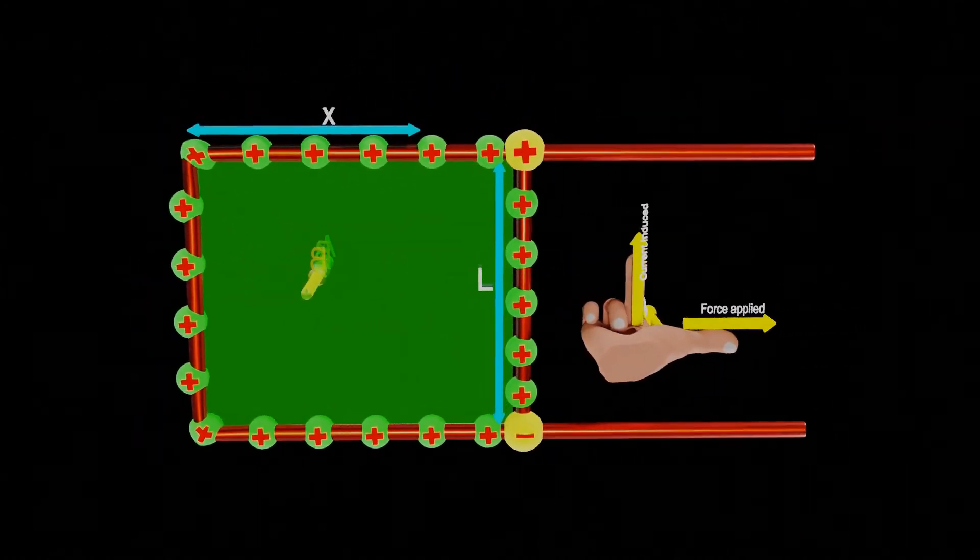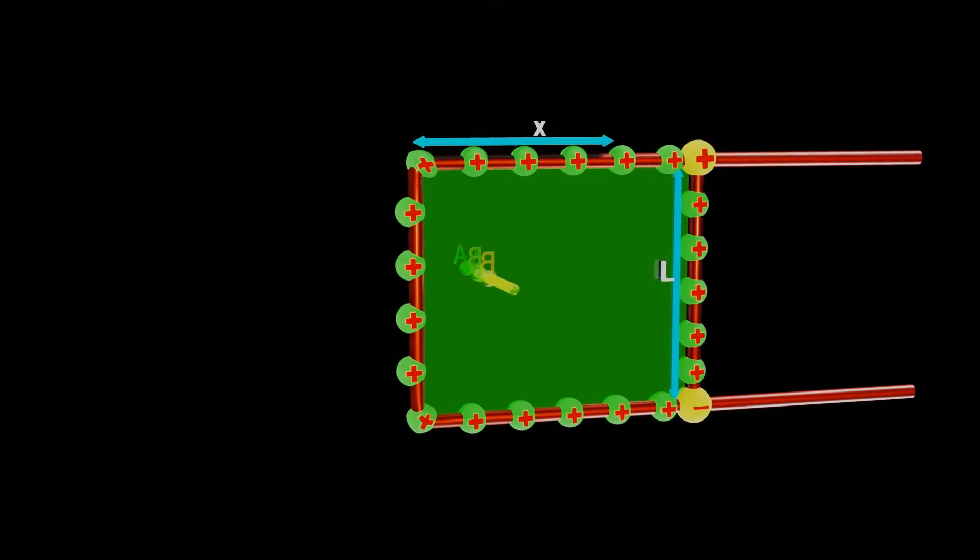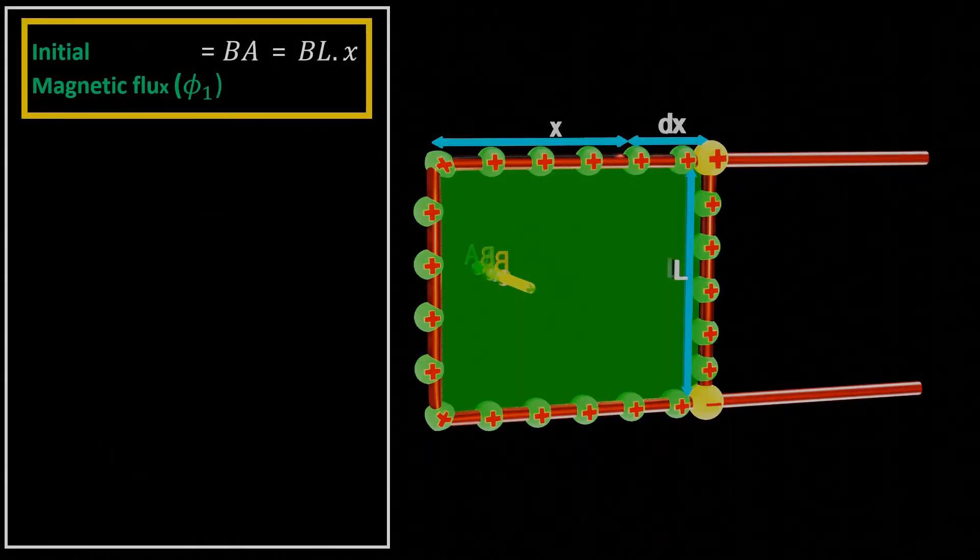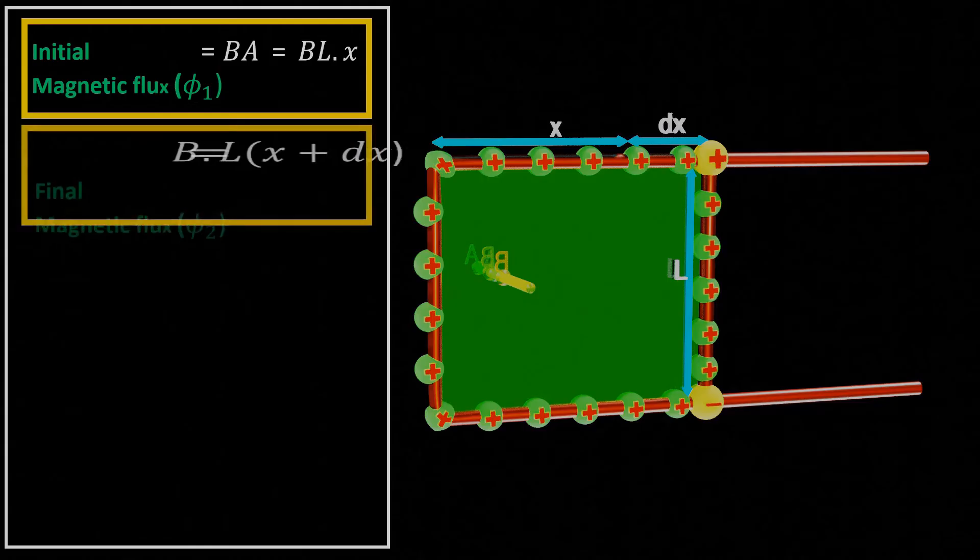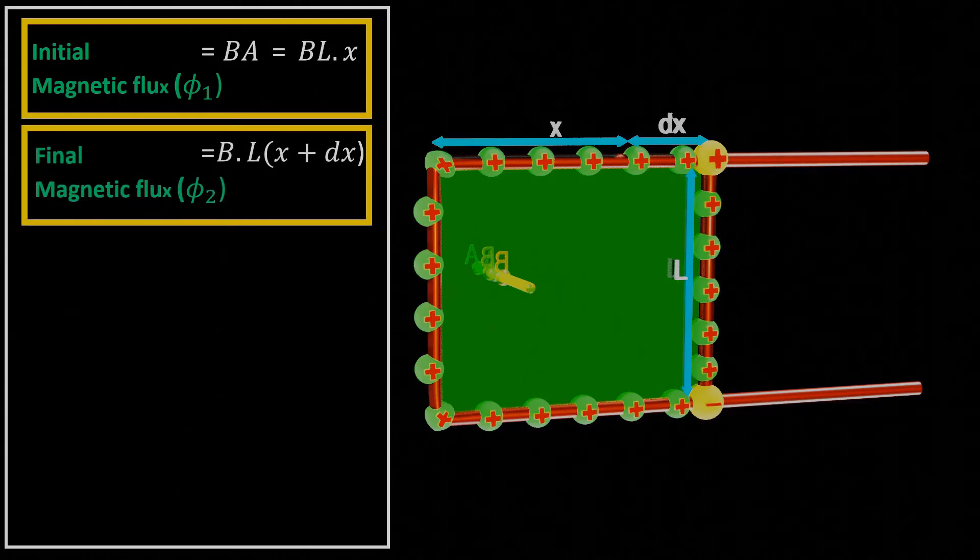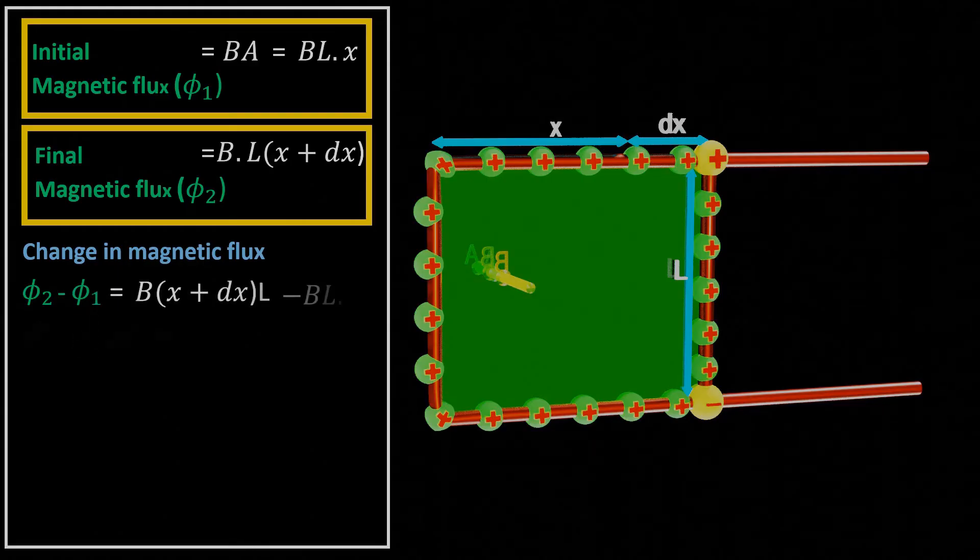As of now, the length of the closed loop is advanced by some distance dx and thus it will give us the final magnetic flux after moving the slider, which will be greater than the magnetic flux initially. Therefore, the change in magnetic flux will be final magnetic flux phi2 minus initial magnetic flux phi1 linking to an enclosed area.